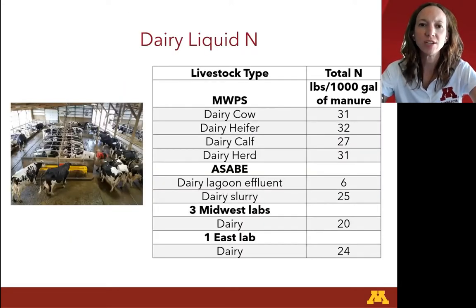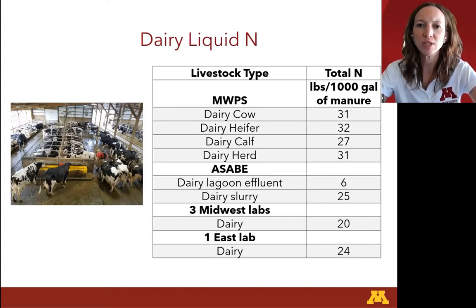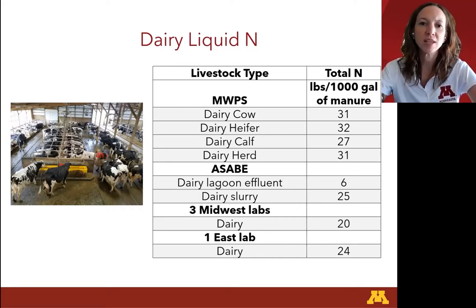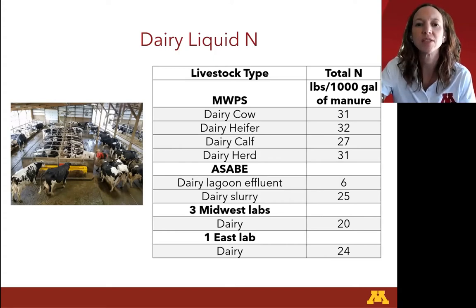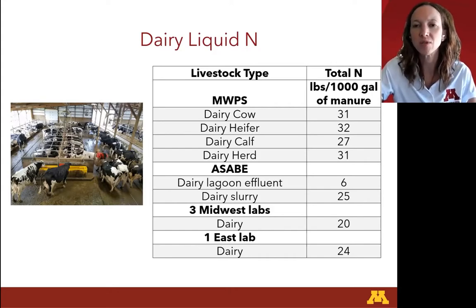For dairy liquid nitrogen, Midwest Plant Service had four different categories ranging between 27 and 32 pounds of total N per thousand gallons of manure. Here are the ASABE numbers, and here are the averages of our three Midwest labs and one Eastern U.S. lab, at 20 and 24 respectively — all lower than those Midwest Plant Service numbers. They were also all lower than the ASABE dairy slurries besides the lagoon effluent. So overall, it did seem to be trending lower.